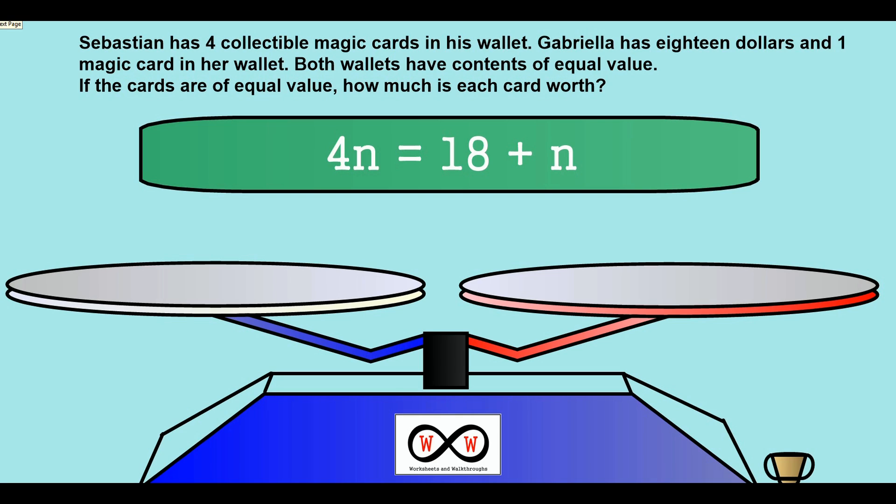Sebastian has four collectible magic cards in his wallet. Gabriela has $18 and one magic card in her wallet. Both wallets have contents of equal value. If the cards are of equal value, how much is each card worth?